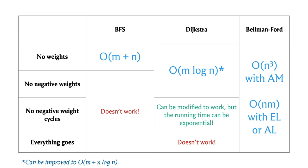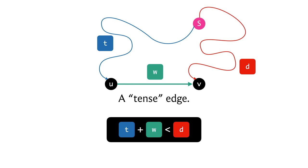Just like Dijkstra's algorithm, Bellman-Ford works by relaxing tense edges. A quick recap: an edge from u to v with weight w is tense if t + w < d, where t and d are our current understood distances of u and v from the source. When this holds, we have discovered a better way of reaching v.